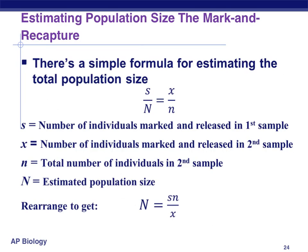Here is the formula used for estimating total population size using the mark and recapture method. S represents the number of individuals marked and released in the very first sample. X represents the number of individuals marked and released in the second sample. Lowercase n represents the total number of individuals in that second sample. Whereas big N — what you're actually solving for — is the estimated population size. The only issue with the mark and recapture method is that it comes with a huge assumption: that the marked individuals have the same probability of being captured as unmarked individuals. So does this method always work for us? No.